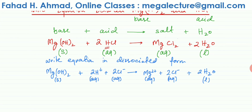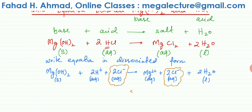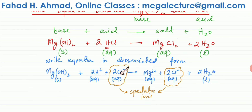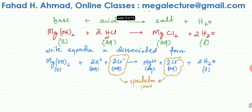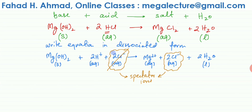This is going to be my ionic equation, except I need to remove a few things. Some ions are not undergoing any change — specifically the Cl⁻ ions. They were roaming around in aqueous state before the reaction and are still in exactly the same state after. These are spectator ions — they're just watching while everything else changes. MgOH₂ changes into Mg²⁺, OH combines with H⁺ to form water, but Cl⁻ remains unchanged. So the final step is to remove these spectator ions.